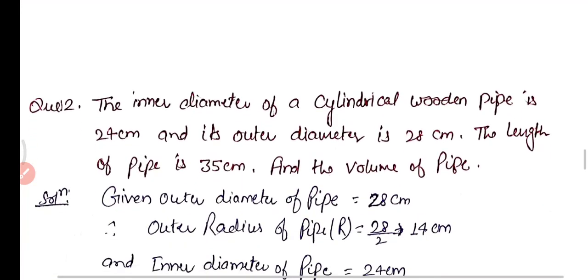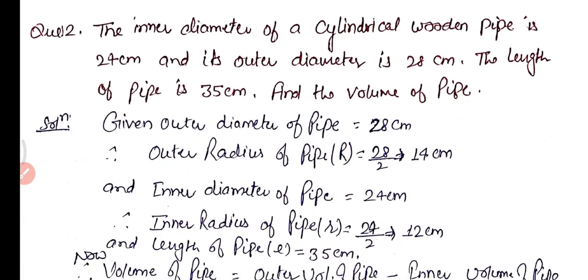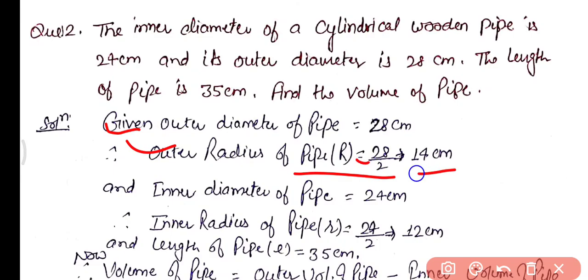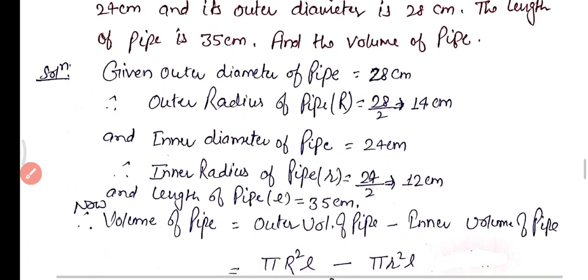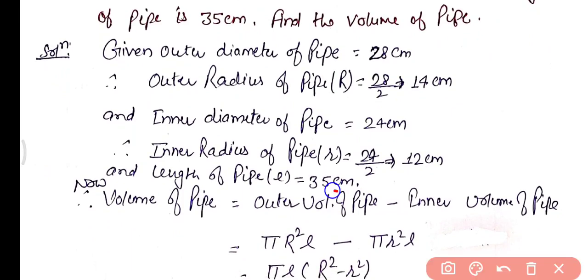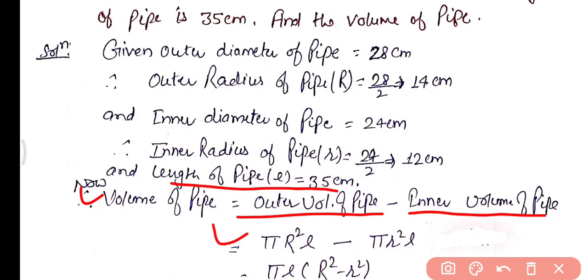Question 2: The inner diameter of a cylindrical wooden pipe is 24 cm and its outer diameter is 28 cm. The length of the pipe is 35 cm. Find the volume of the pipe. Outer radius R = 28/2 = 14 cm, inner radius r = 24/2 = 12 cm, and length l = 35 cm. The volume of the pipe equals outer volume minus inner volume, that is πR²l − πr²l = πl(R² − r²).